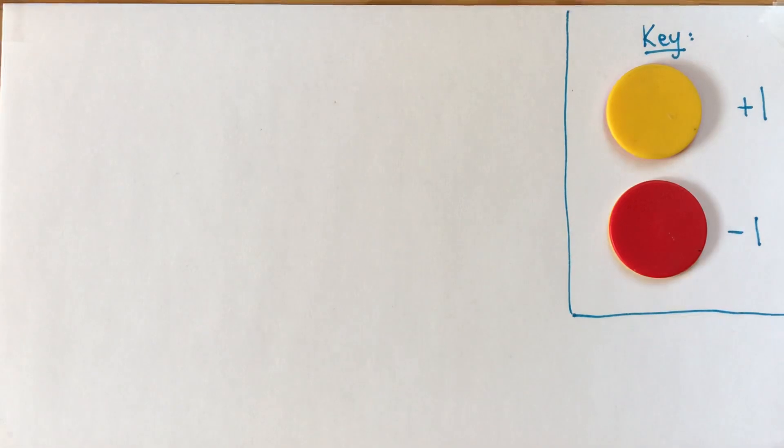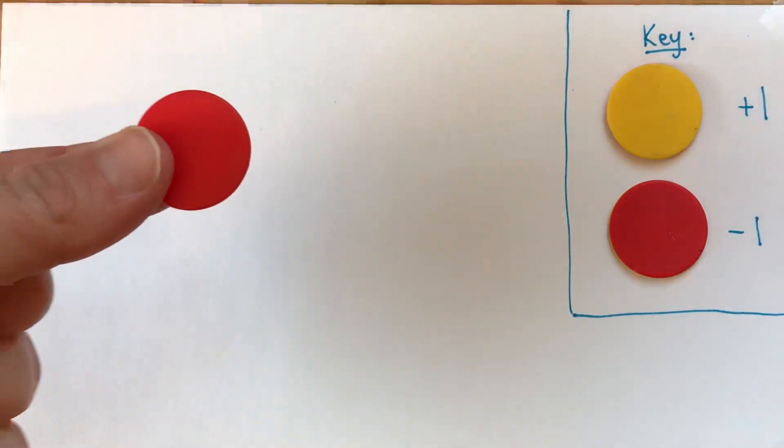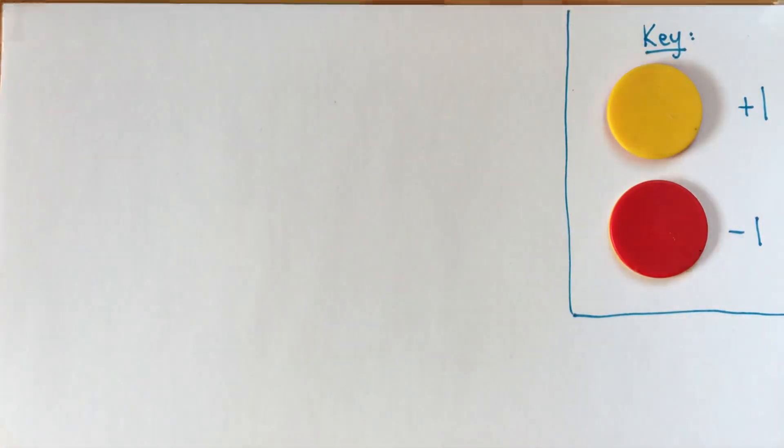The kind of two-color counters I have are red on one side and yellow on the other. Different kinds of counters can look different, it doesn't matter, as long as you can tell one side apart from the other.